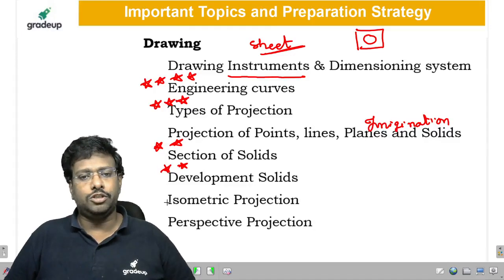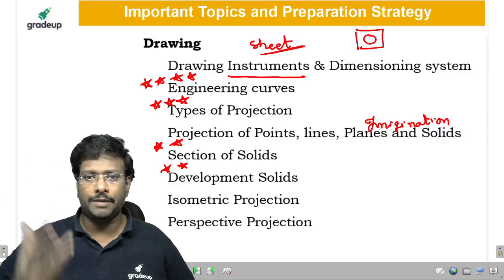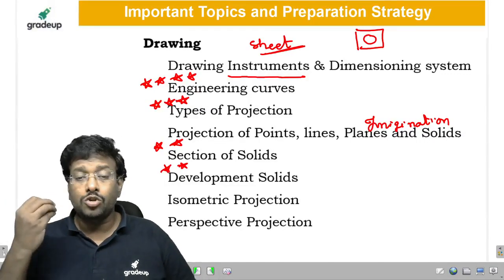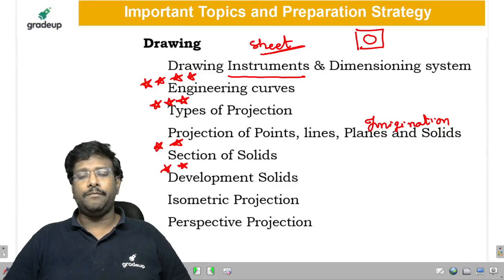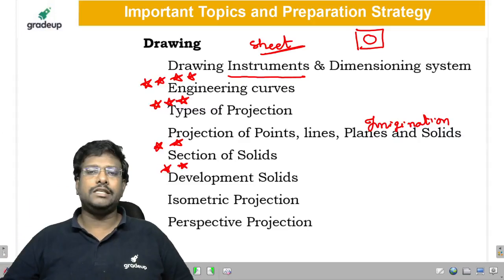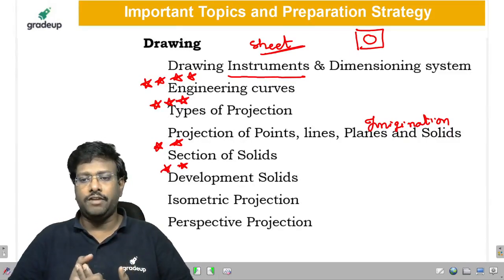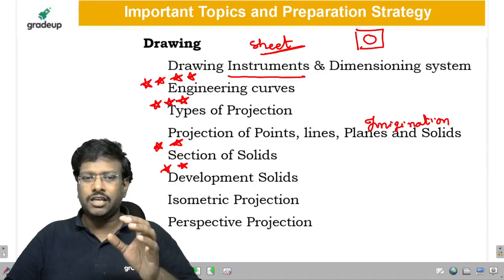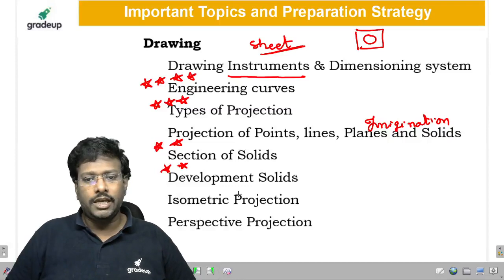Next is isometric projection. In order to convey ideas from one person to another, we use different ways to represent objects, and isometric is one of the most important. You need to know how to represent an object isometrically, and key facts — for example, if an object has a length of 12, how much will it appear in isometry.